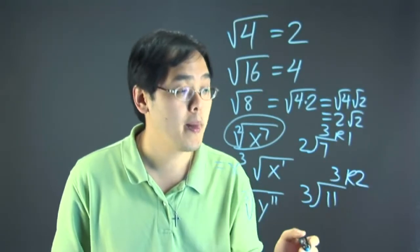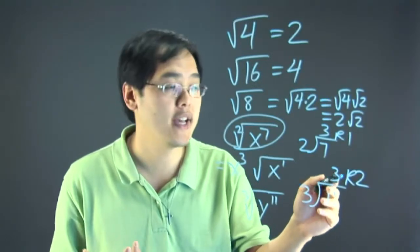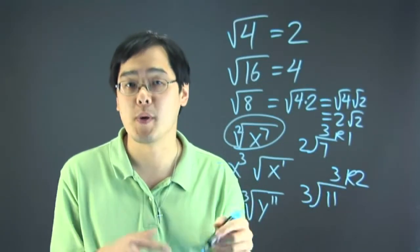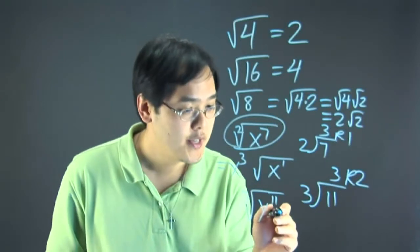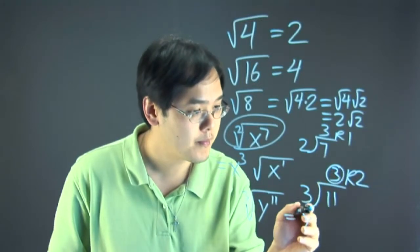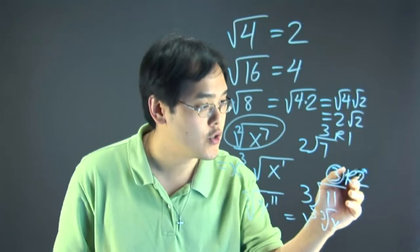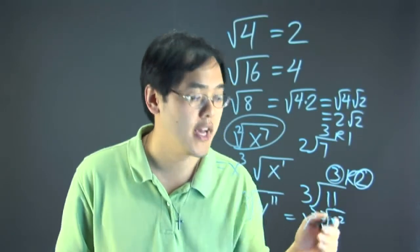The 3 means this is the exponent of y that goes on the outside, and the remainder 2 is the exponent of y that stays on the inside. So what this tells you is the cube root of y to the 11th is y to the 3rd, cube root of y to the 2nd, the exponent that's remaining.